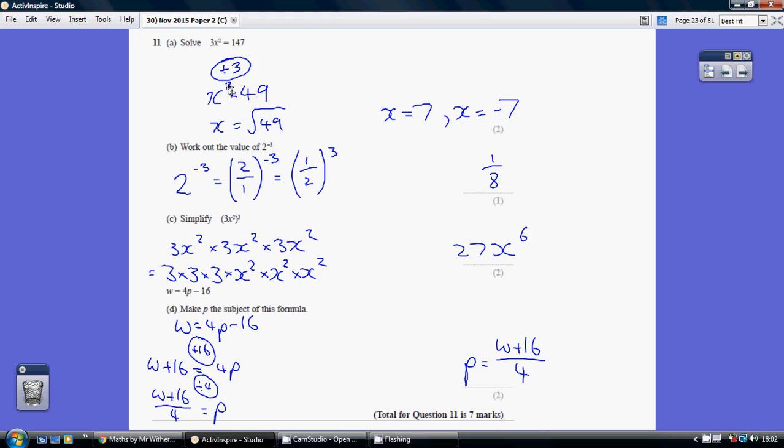How do we undo a squaring? Well we square root 49. And now be careful the square root of 49. Well yes it's 7 because 7 times 7 is 49.